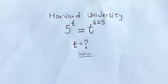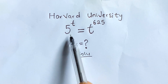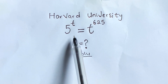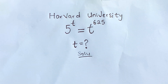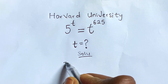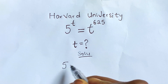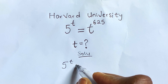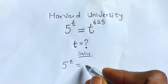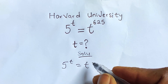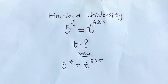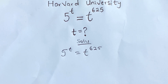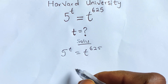We are asked to find the value of t in this equation. To find the value of t, we can write this as 5 to the power of t is equal to t raised to 6 over 5.